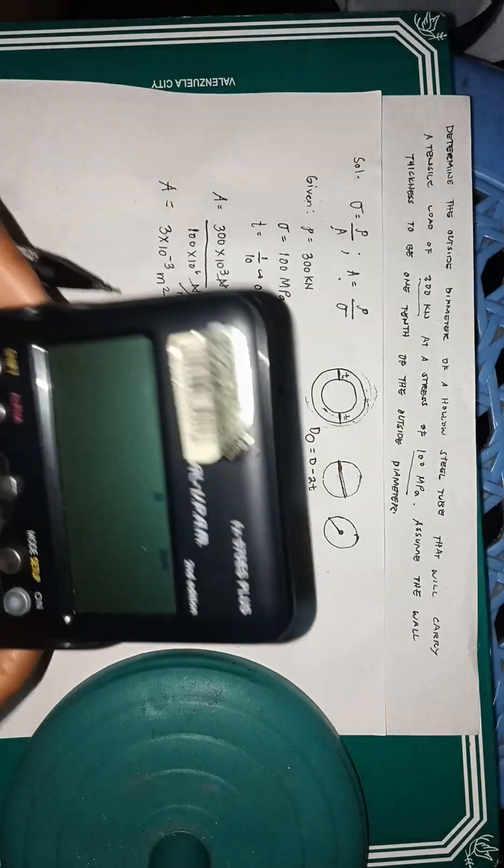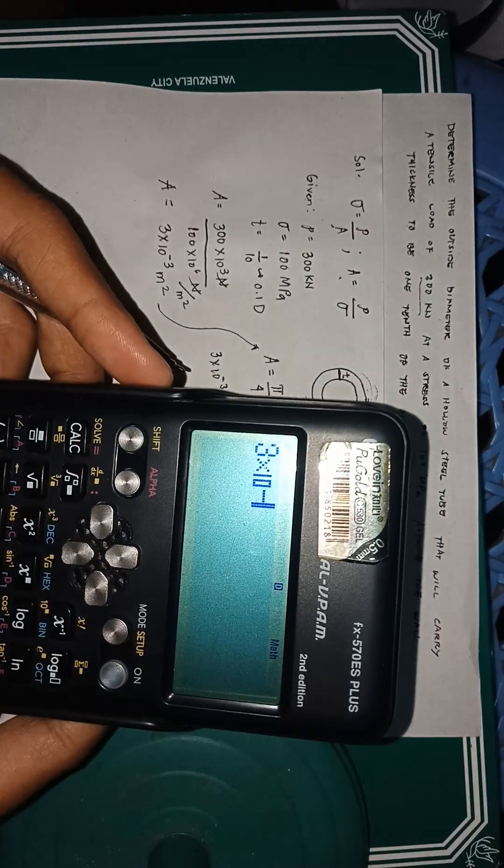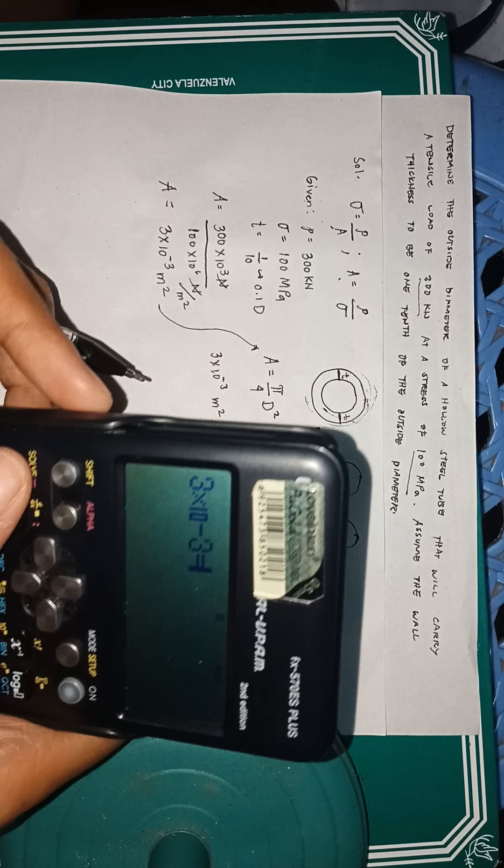Just do the shift, so 3 to the power of negative 3 equals pi over 4 d squared minus pi over 4 d minus 2 times 0.1 squared and click shift.